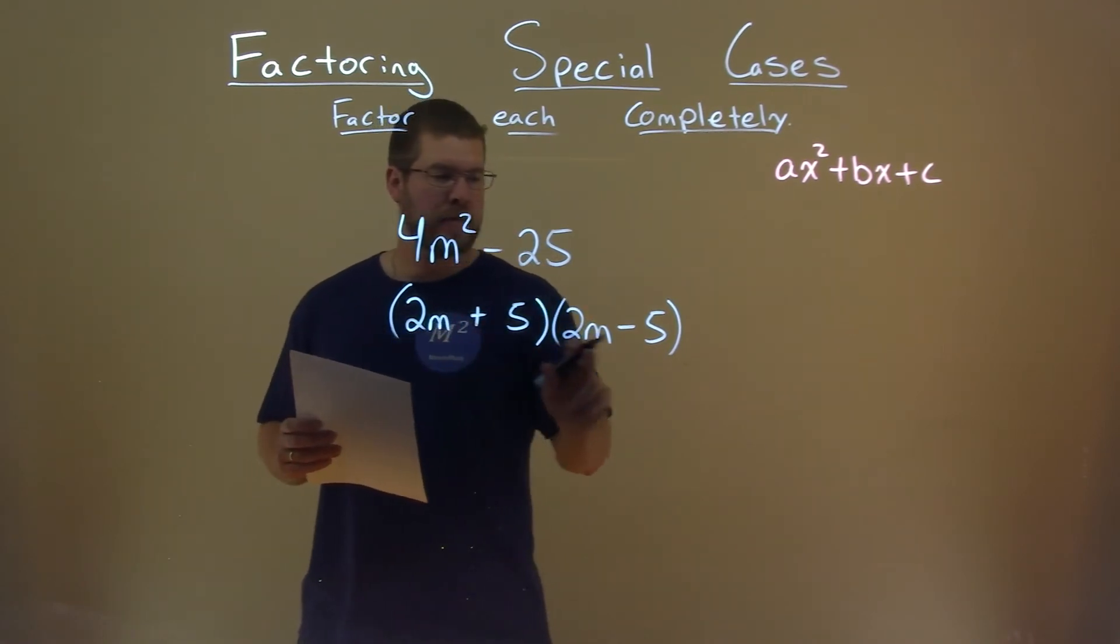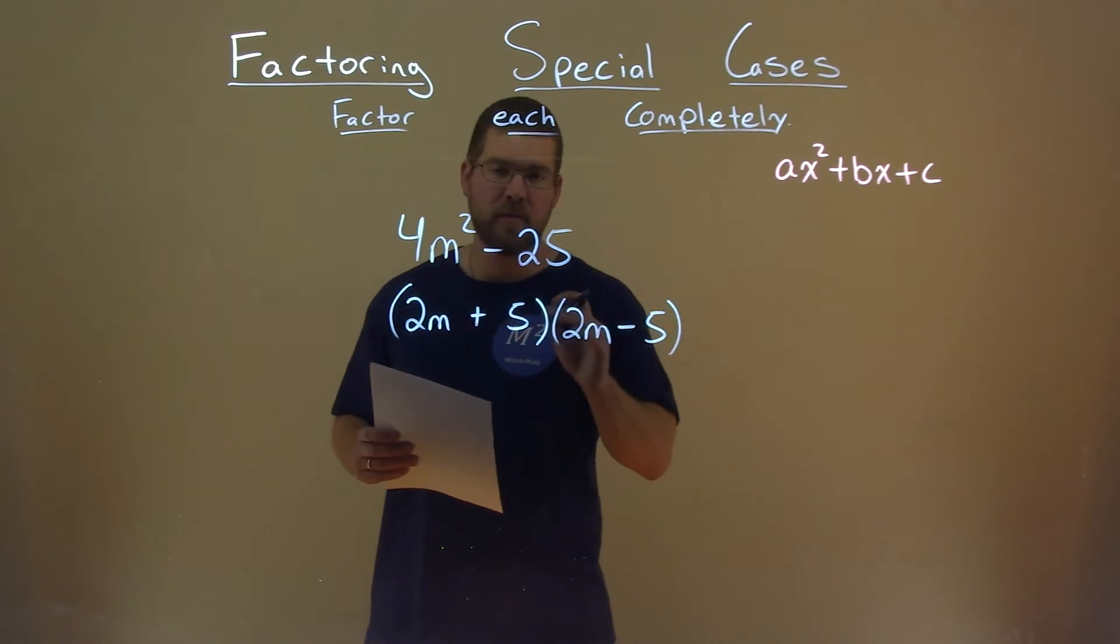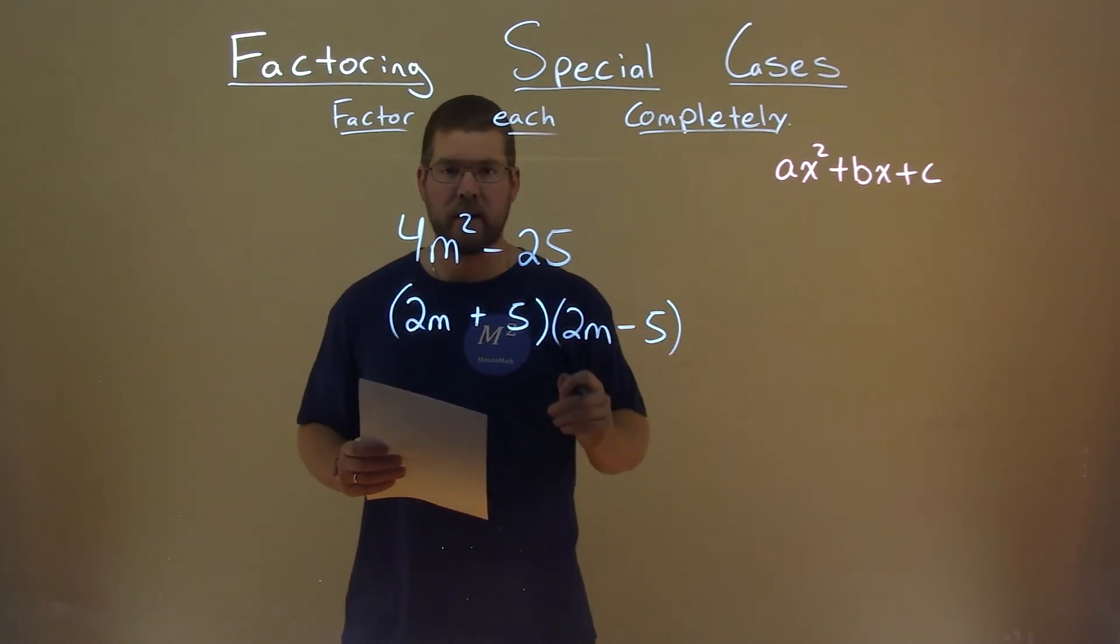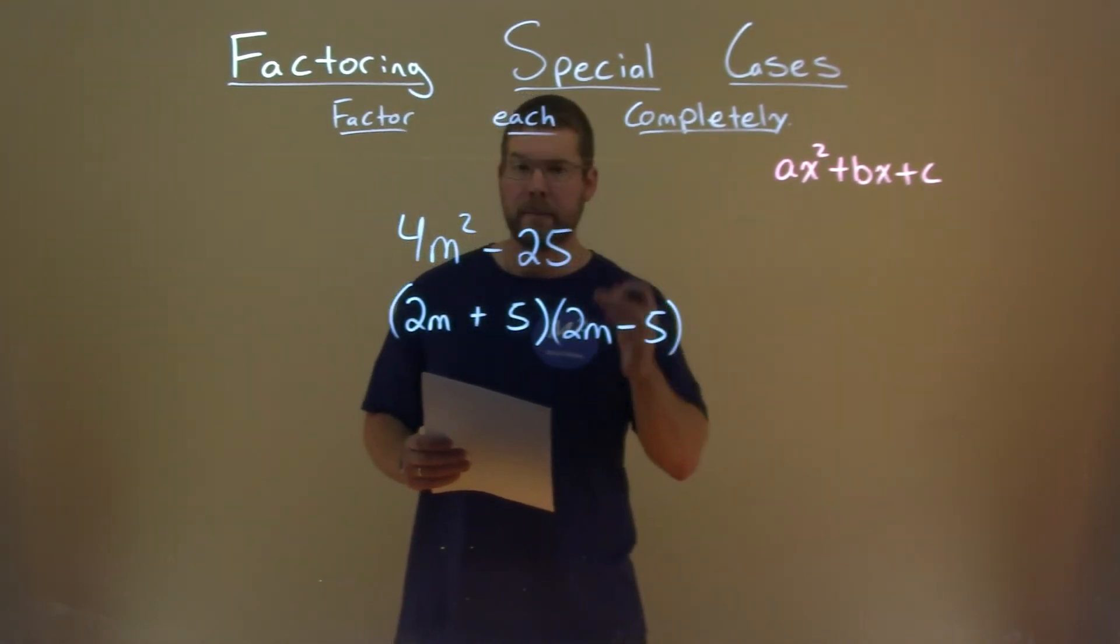Here's the kicker. 2m times a negative 5 plus 5 times the 2m gets you 0, and that's that 0 bx right there. So, our final answer is 2m plus 5 times 2m minus 5.